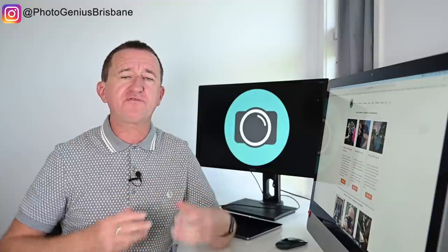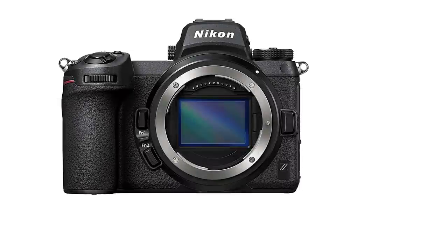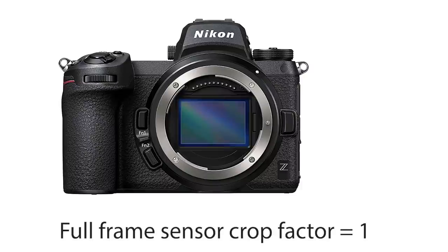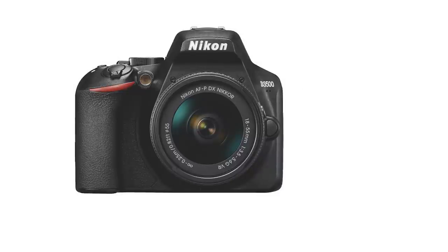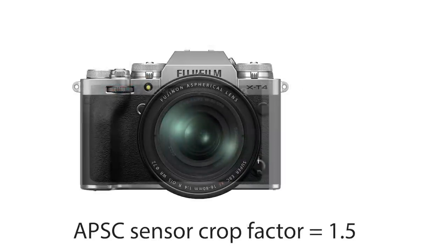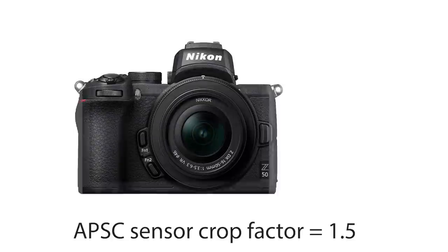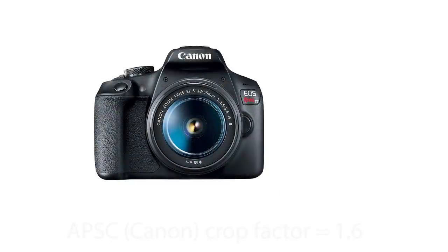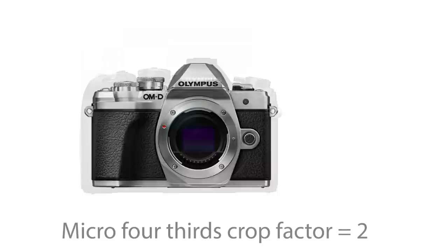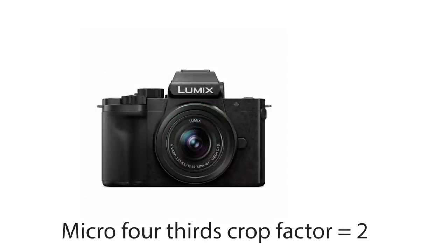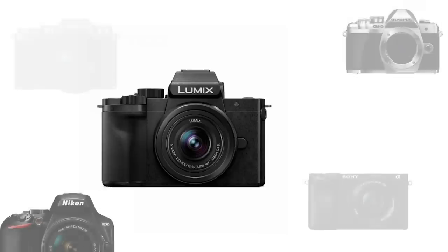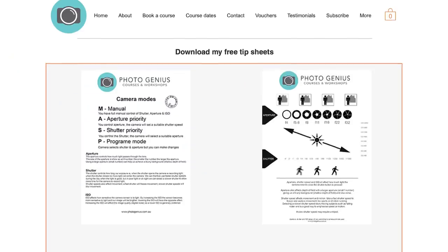Because there are a range of different sensor sizes there are going to be different crop factors. Based on the dimensions of 35mm film, a full frame sensor is the standard and is therefore given a crop factor of 1. Most cameras use the popular APS-C size sensor, which is given a crop factor of 1.5, with the exception of Canon whose crop factor is 1.6. Panasonic and Olympus use the micro four-thirds system, which has a crop factor of 2. If you're not sure what the crop factor is for your camera you can check out the PhotoGenius website for more info.